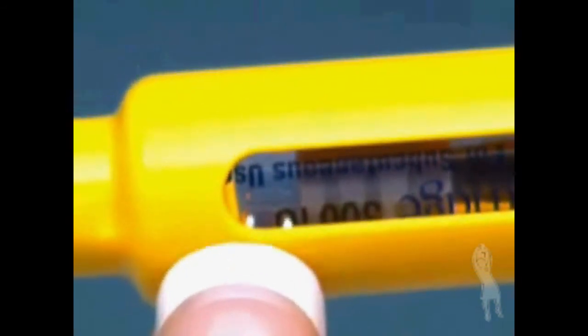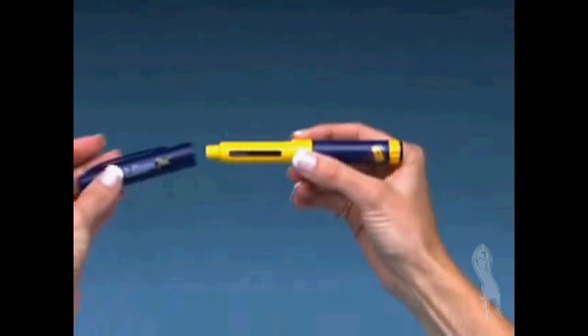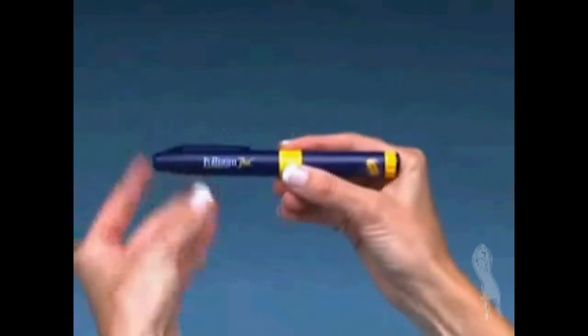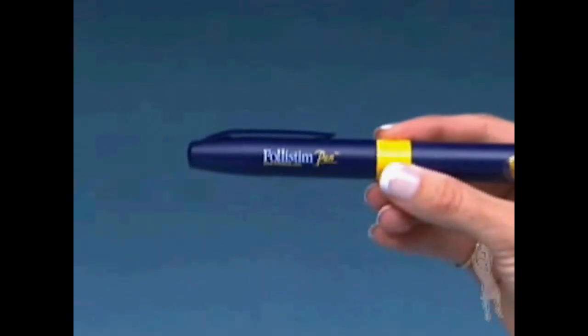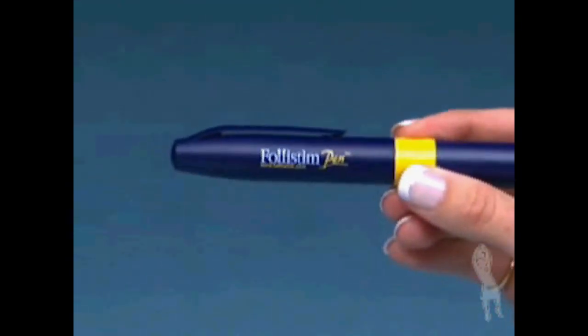If there is medication remaining in the Follistim AQ cartridge, put the pen cap back on the pen body and store your Follistim pen in a safe place in the refrigerator or at room temperature. Never store the Follistim pen with a needle attached to it.